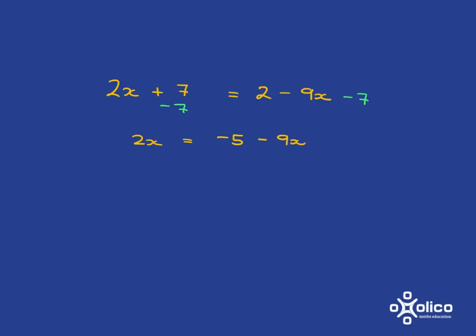Now, remember, we want to get rid of the x's on this side. So in order to get rid of the 9x, we're going to add 9x. And if we do it to one side, we have to do it to the other side. So what we'll get is 11x is equal to negative 5. And now it's very easy to complete. We just divide both sides by 11 and we get our answer, negative 5 elevenths.